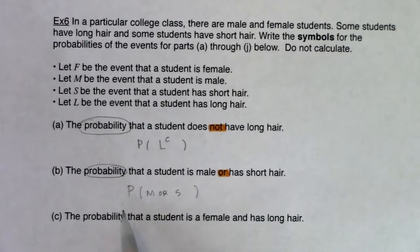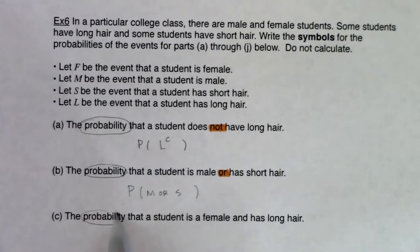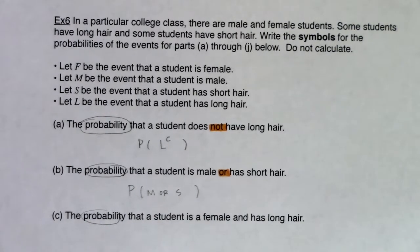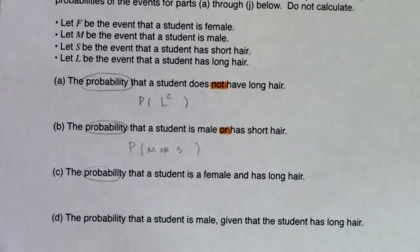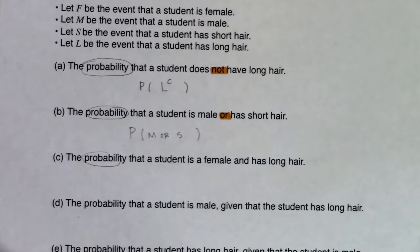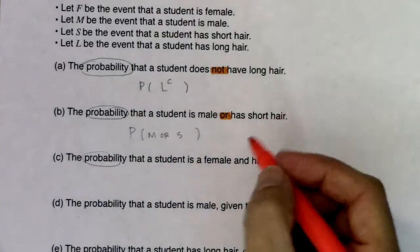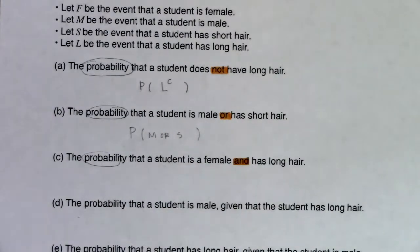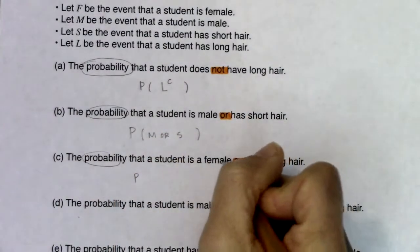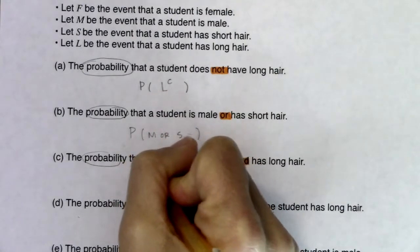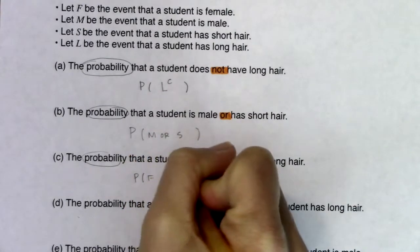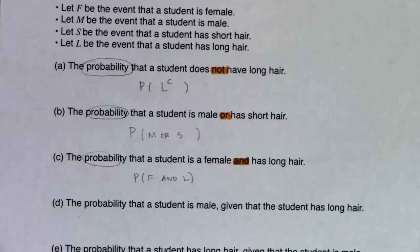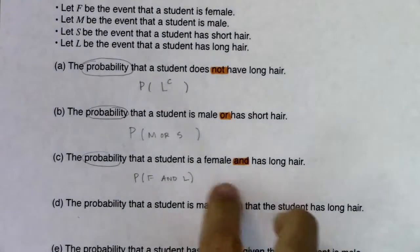For part C, we've got the probability that a student is female and has long hair. That probability phrase is showing up all over the place — we're in chapter three so it's always going to be probabilities. The buzzword here is 'and,' so we've got the probability of female and long hair: P(F and L). If I was continuing on, I'd have an equal sign here and some numbers.